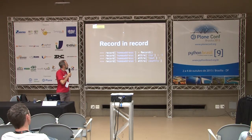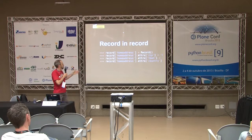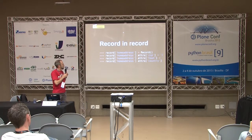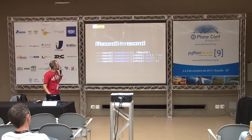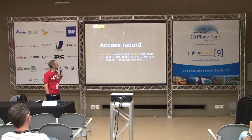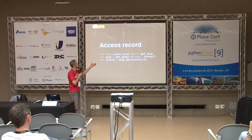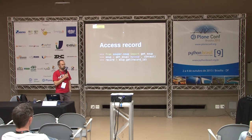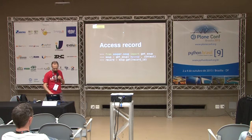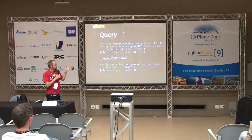You can have a record inside a record — no problem. So here, my record and my address are going to have nested attributes. It makes no problem. And you can access your record very easily as well. You get your soup and get your record by its ID. Nothing difficult here.